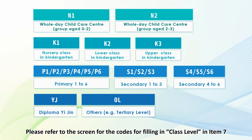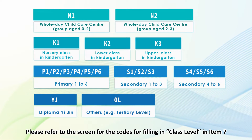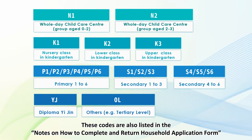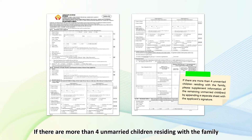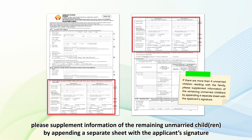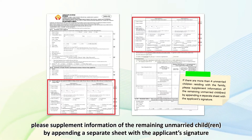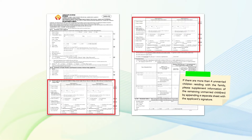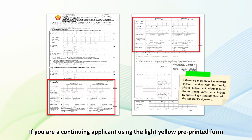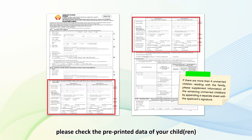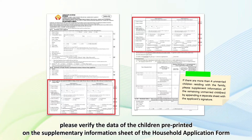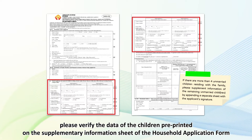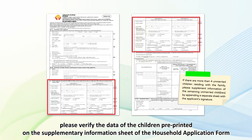Please refer to the screen for the codes for filling in class level in Item 7. These codes are also listed in the Notes on How to Complete and Return Household Application Form. If there are more than four unmarried children residing with the family, please supplement information of the remaining child or children by appending a separate sheet with the applicant's signature. If you are a continuing applicant using the light yellow pre-printed form, please check the pre-printed data of your child or children. If there are more than four, please verify the data pre-printed on the Supplementary Information Sheet.